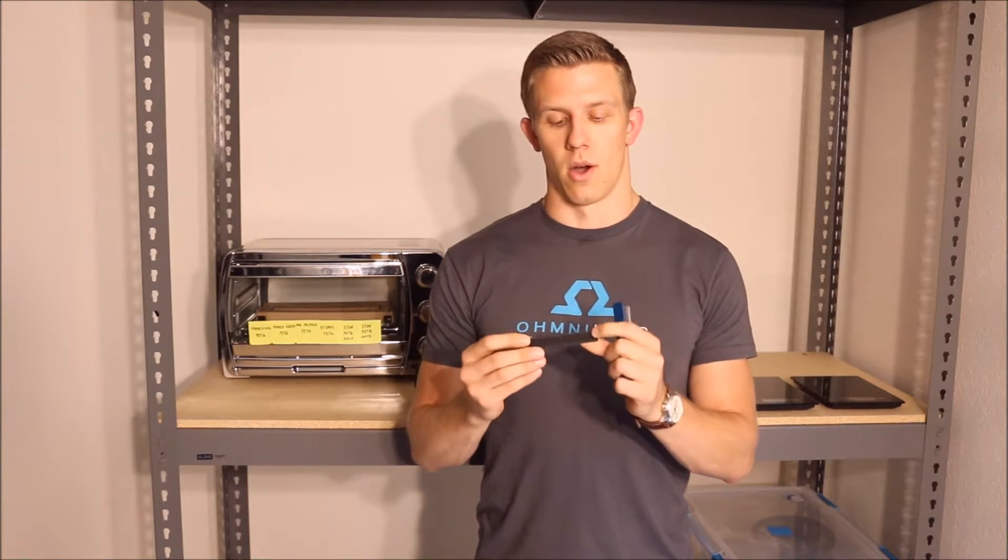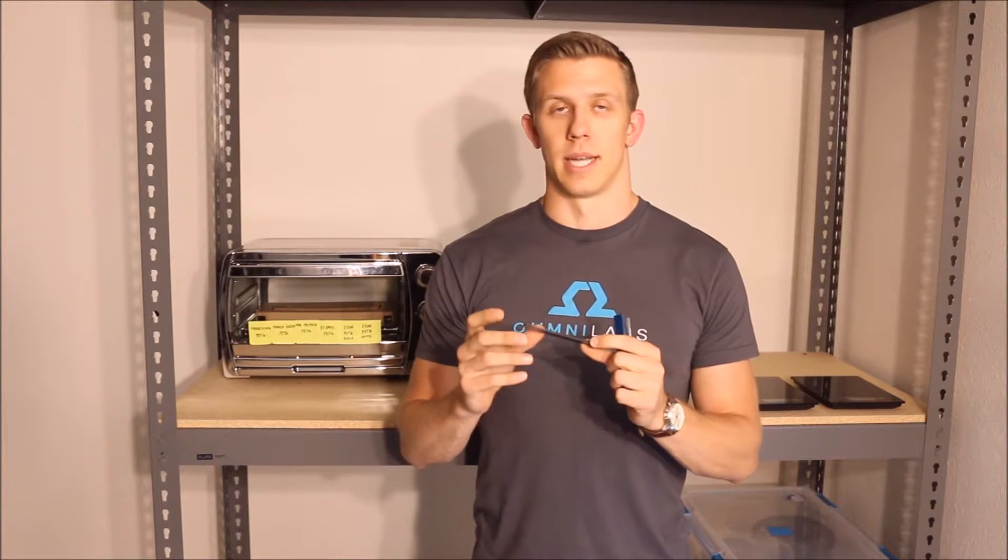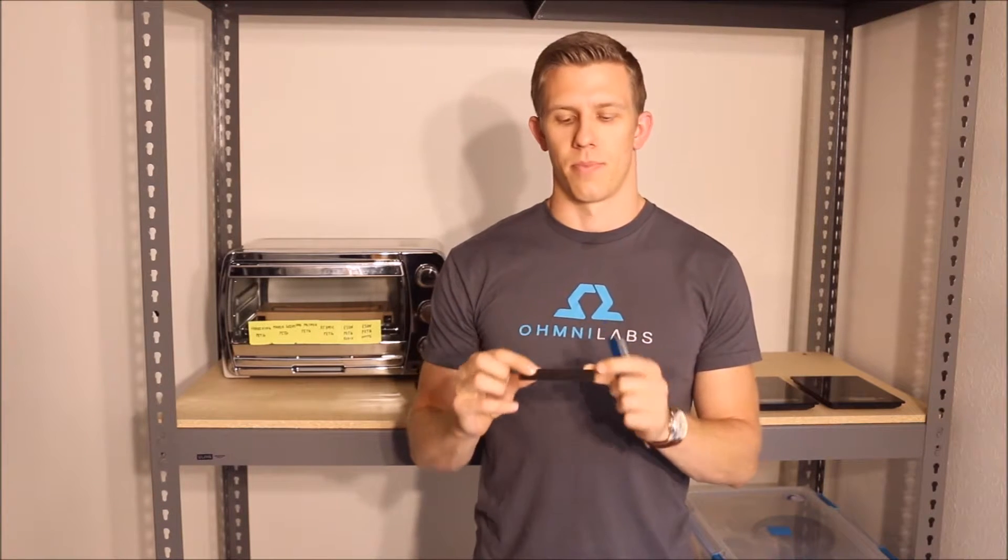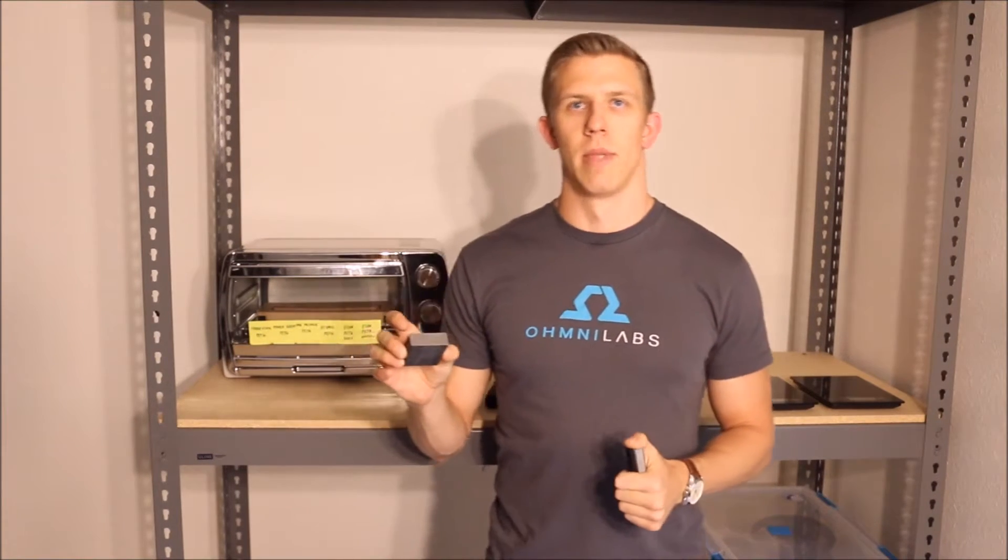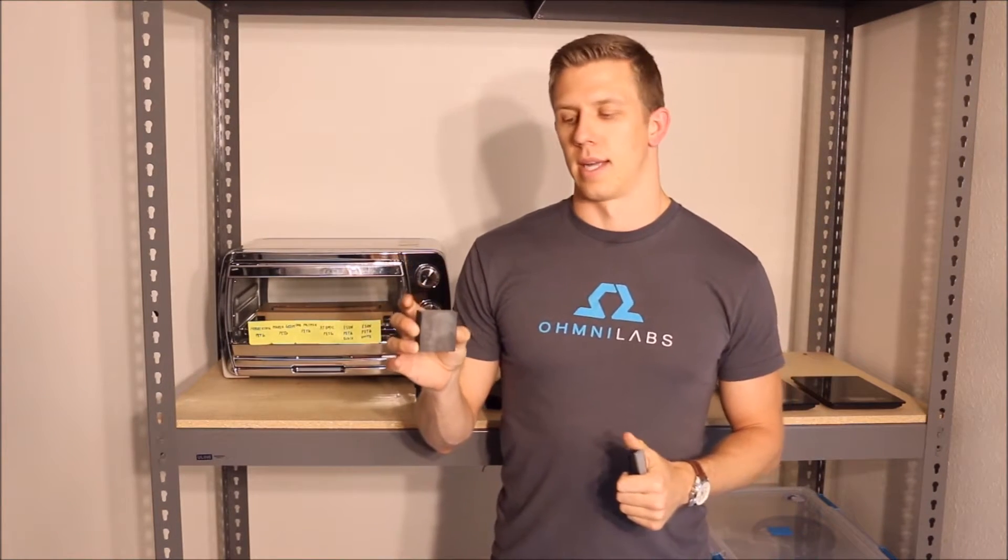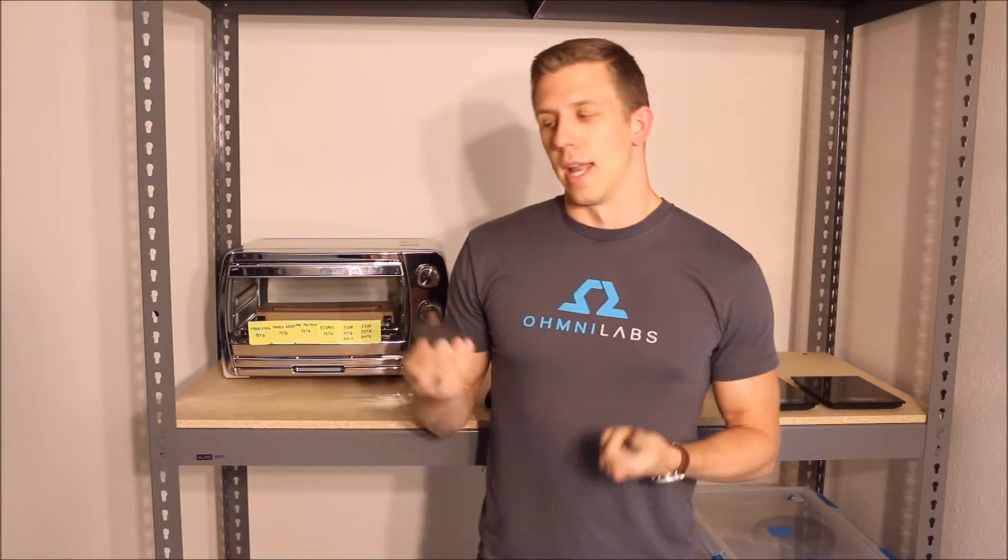Now these specimens we made are 1 centimeter by 10 centimeters by 3 millimeters, and we're going to be adding these 400 gram steel blocks to the top of them to show when the plastic has softened. And let's get started.